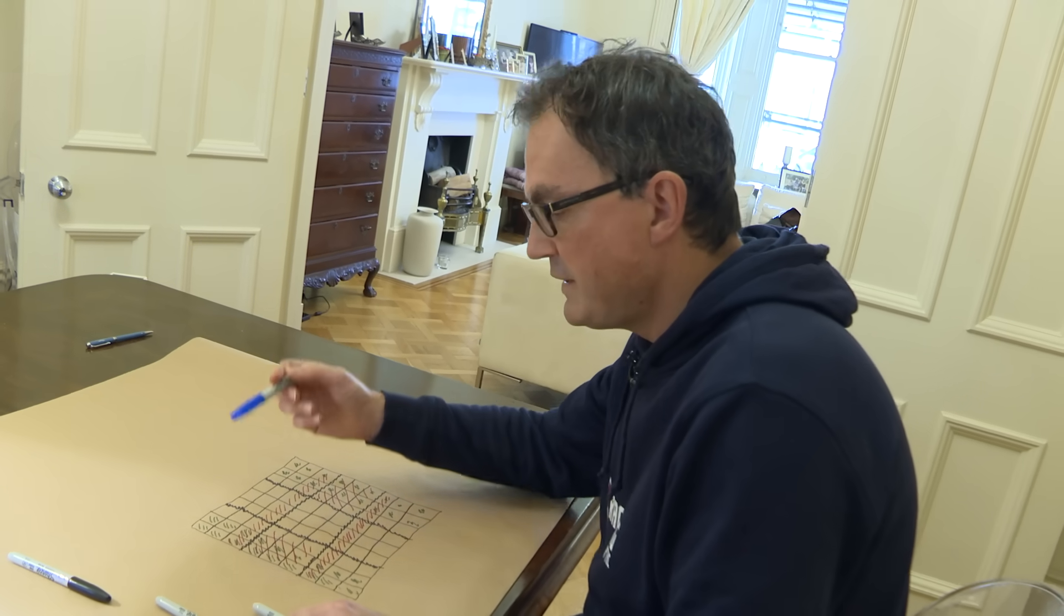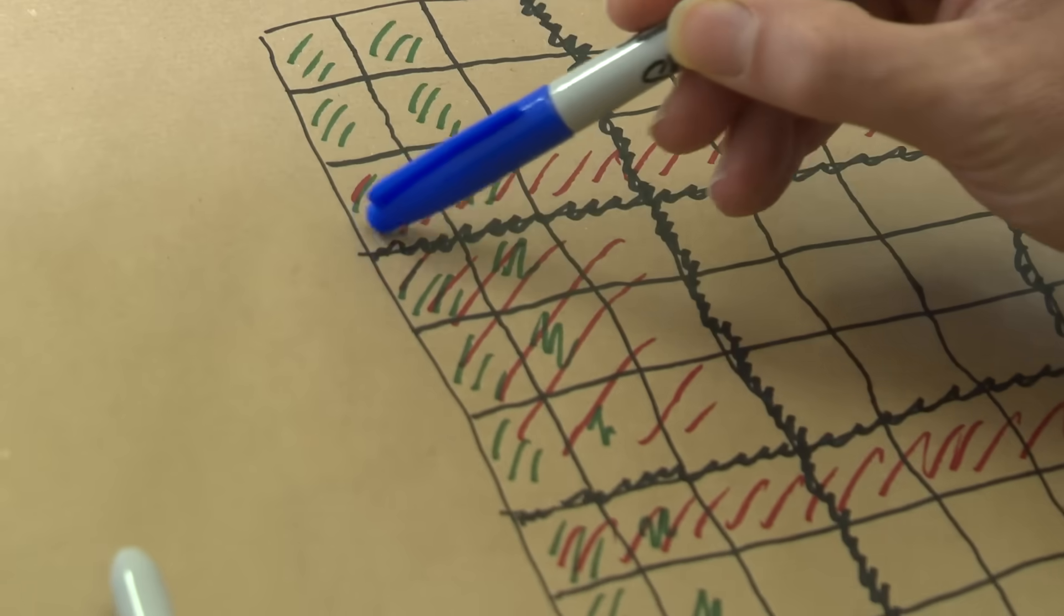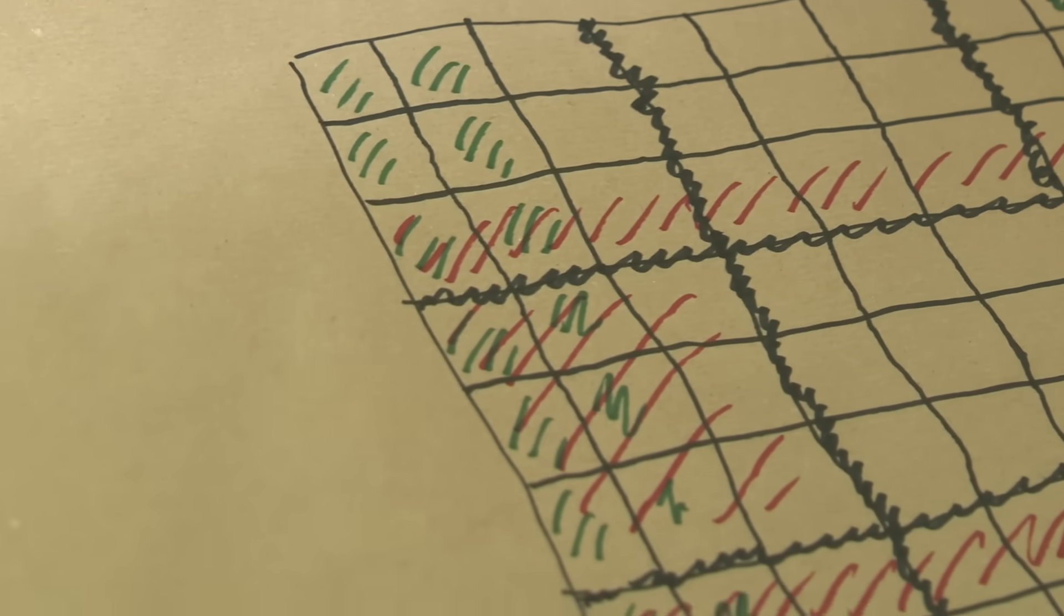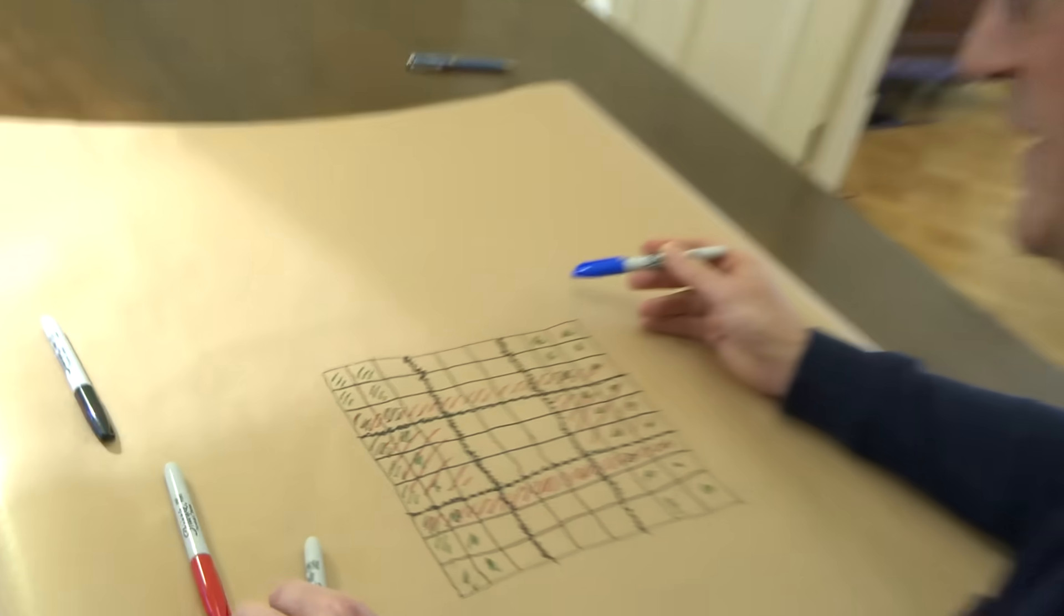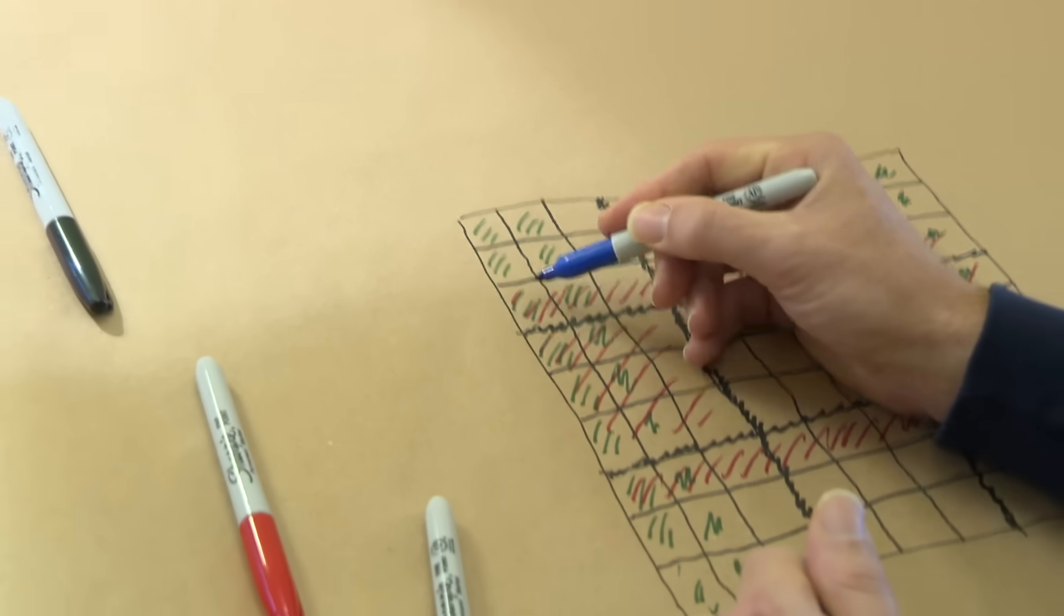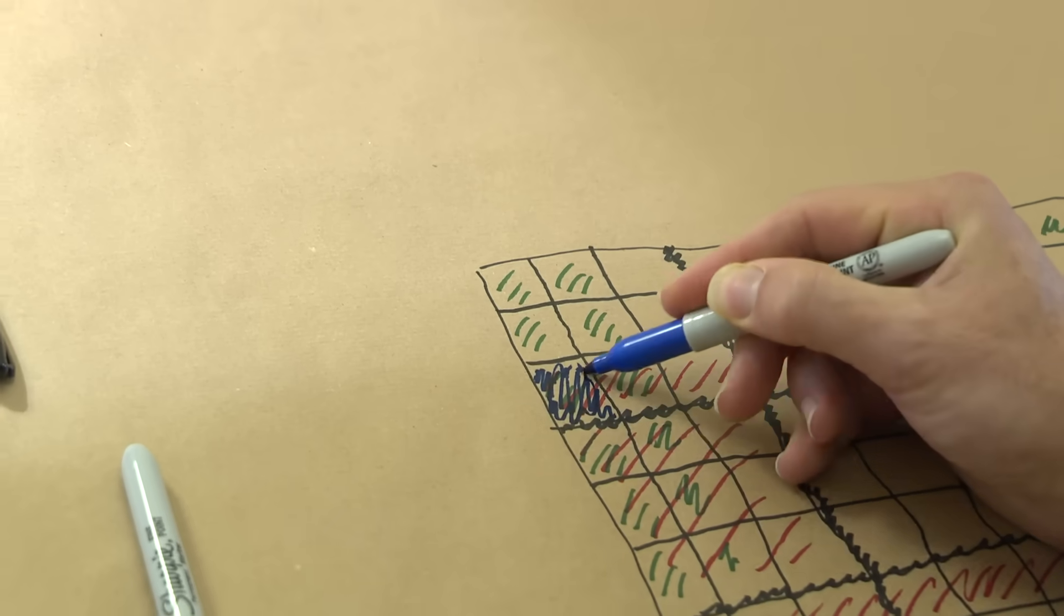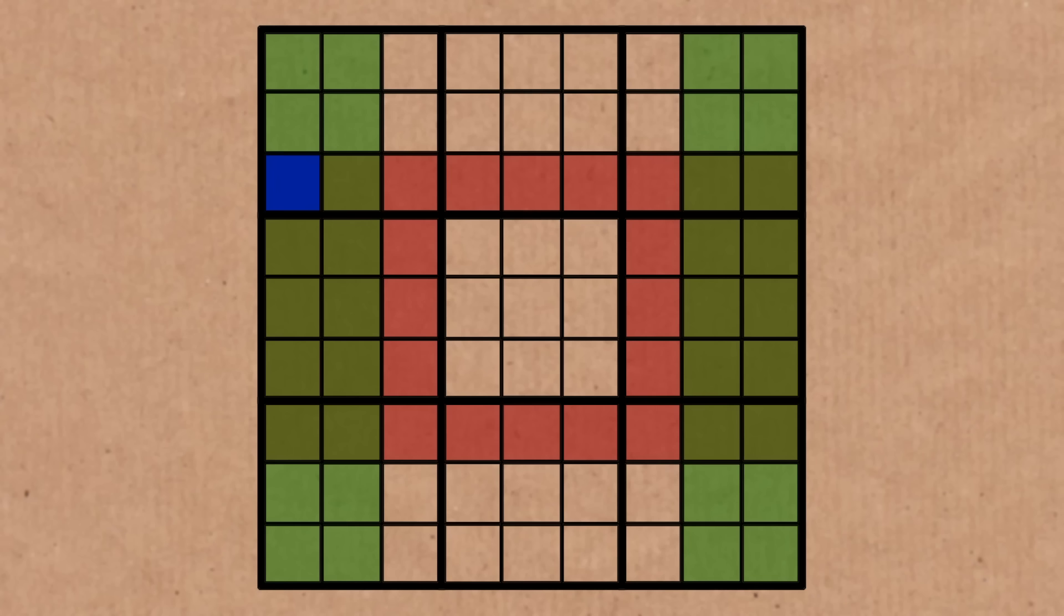Now, the trick to understanding the Phistomefel ring is to focus on one of these cells that has two colours in it. So let's look at this cell here. And imagine that we removed it from both the green set and the red set. So let's imagine that we just take this out. I'll make it blue. So I'm removing this from both the green set and the red set. What can we say about the remaining cells now in green and red?